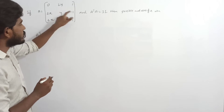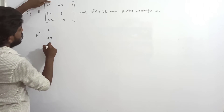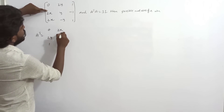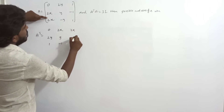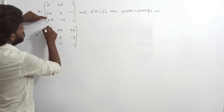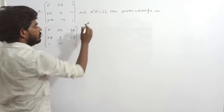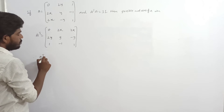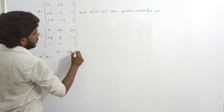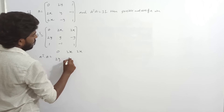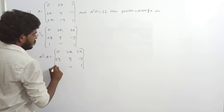A has first row 0, 2y, 1; second row 2x, y, minus 1; third row 2x, minus y, 1. A transpose has columns become rows. Then A transpose into A: first row of A transpose is 0, 2x, 2x; then 2y, y, minus y; then 1, minus 1, 1.